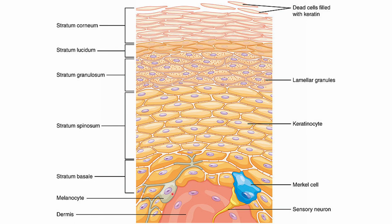Melanocytes and Merkel cells are found in the stratum basale. The Merkel cells are connected to sensory neurons, which are found in the dermis, not in the epidermis. The Merkel cells serve as a bridge between the upper layers and the lower layers — they will sense any change taking place and send it to the sensory neurons, which eventually connect to your central nervous system, bringing us to consciousness of sensation.